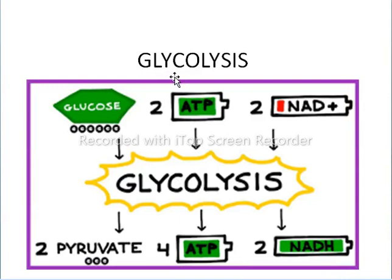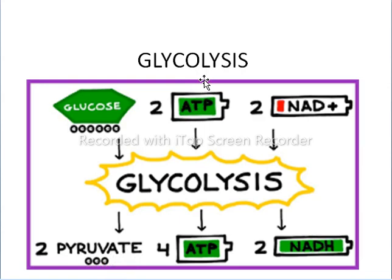So what is glycolysis? Glyco means glucose or sugar and lysis means splitting. So the splitting of glucose, which is a 6-carbon molecule, into 2 pyruvate or pyruvic acid, that is a 3-carbon molecule, is called glycolysis. Glycolysis is performed in the cytoplasm or cytosol of the cell, both in aerobic and anaerobic conditions.